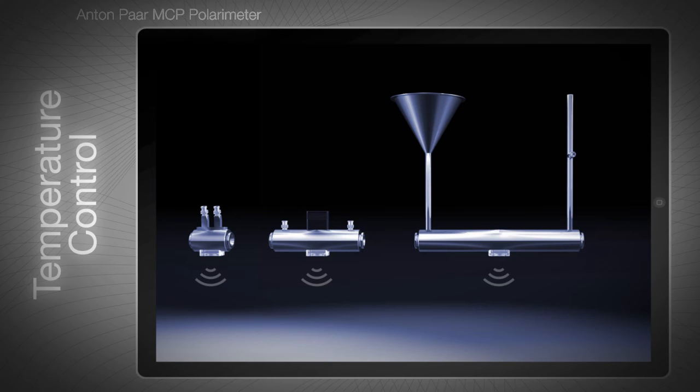Live temperature data is transmitted wirelessly from the cell to the instrument. The wireless temperature measurement is unique to MCP polarimeters. It eliminates connecting cables that could break or need cleaning. Please refer to the video about Toolmaster for more information concerning the wireless Toolmaster technology.